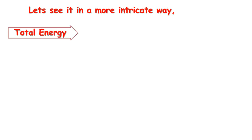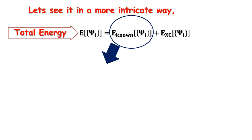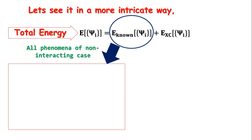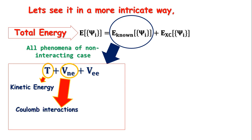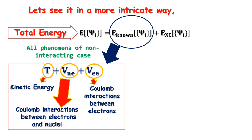The total energy is made of two terms, namely E_known and E_unknown, or EXC. As you may have guessed already, the known part includes all the quantum mechanically non-interacting effects. The main weightage of this part is given by T plus V_ne plus V_ee, where T is the kinetic energy of the electrons, V_ne is the interaction energy between electrons and the nucleus, and V_ee is the Coulomb interaction between electrons, or the Coulomb interaction of the electron density with itself.